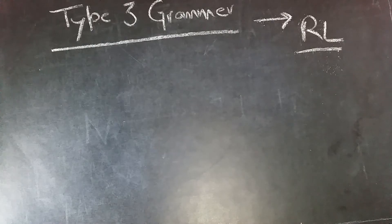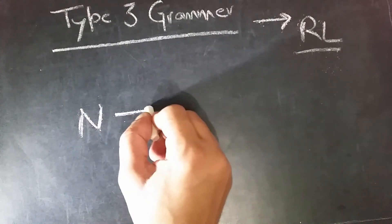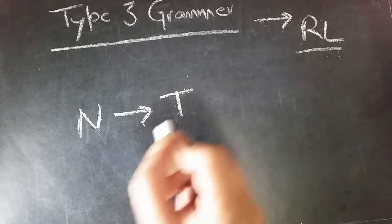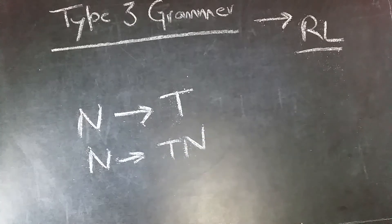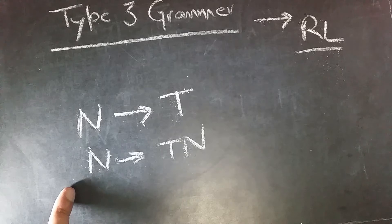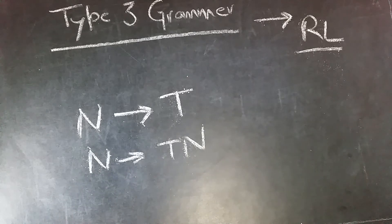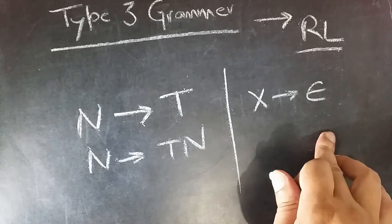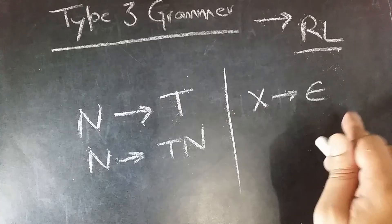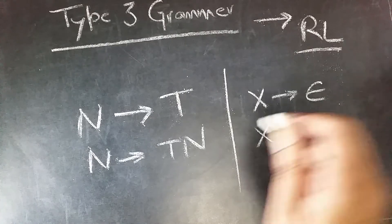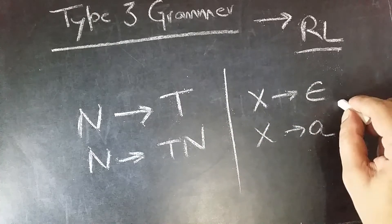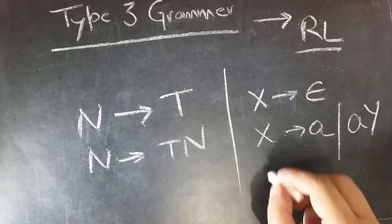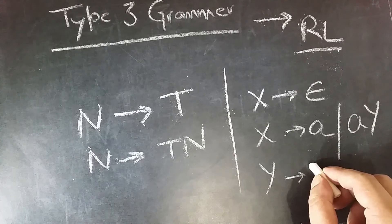Let's see type 3 grammar in detail. Type 3 grammars generate regular language. Type 3 grammar must have a single non-terminal on the left hand side and the right hand side consisting of a single terminal, or a single terminal followed by a single non-terminal. These are the only two productions allowed in type 3 grammar — it is the most restrictive of them all. For example, x gives epsilon is allowed only if x does not appear on the right side of any rule. x can give a single terminal or a single terminal followed by a non-terminal.